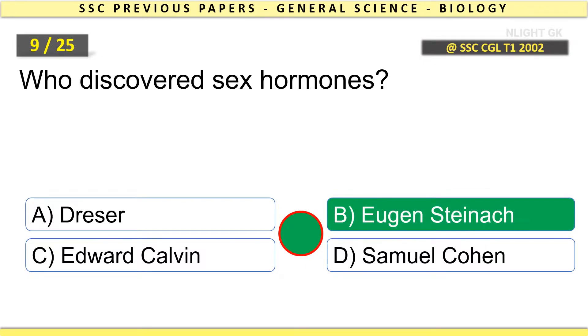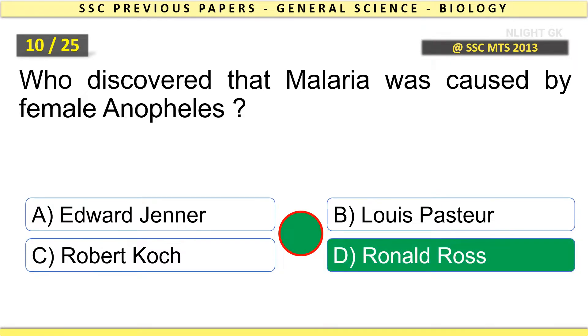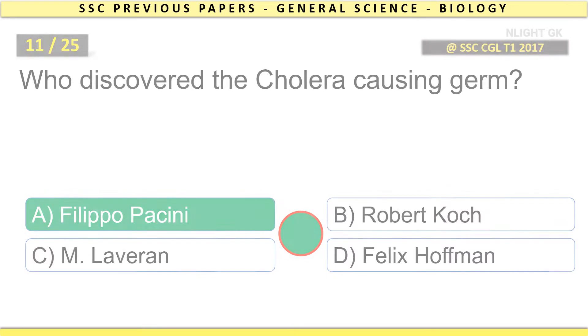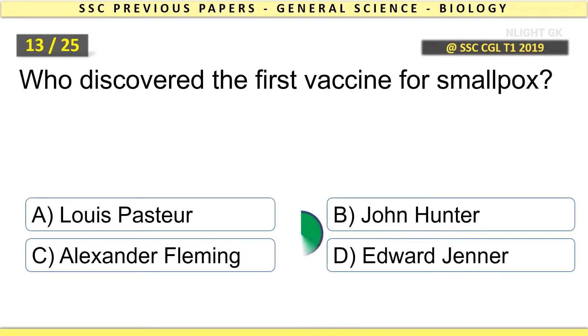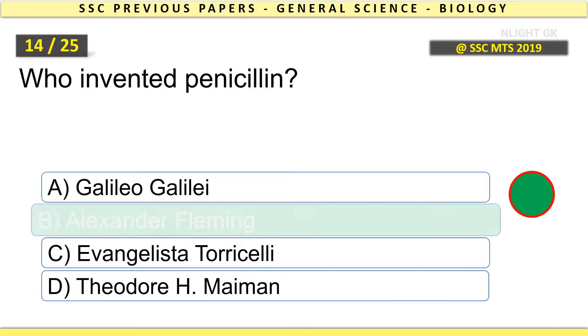Who discovered malaria was caused by female anopheles mosquito? Who discovered the first vaccine for smallpox? Edward Jenner. Who invented penicillin? Alexander Fleming.